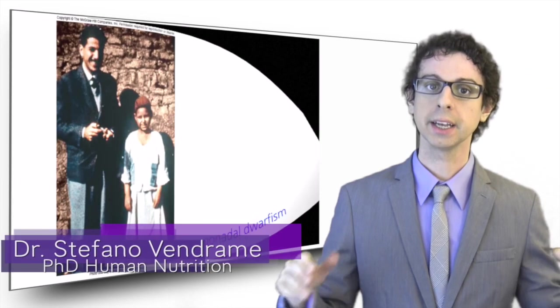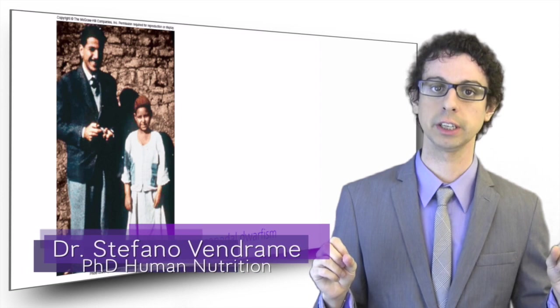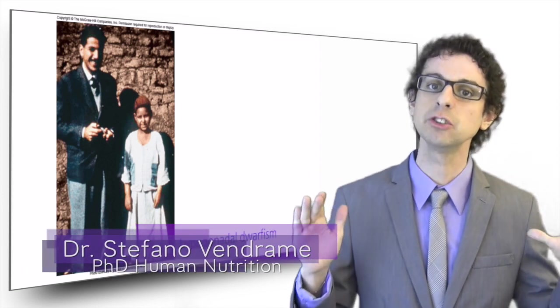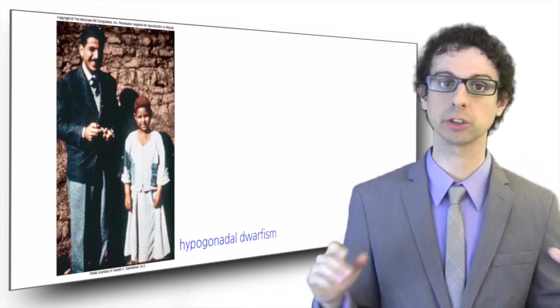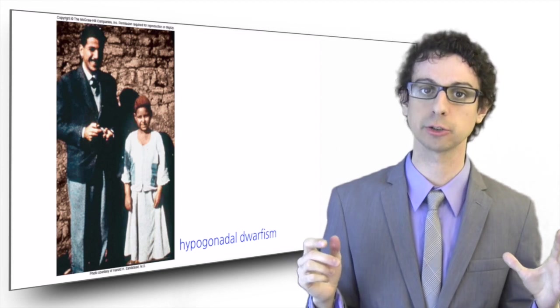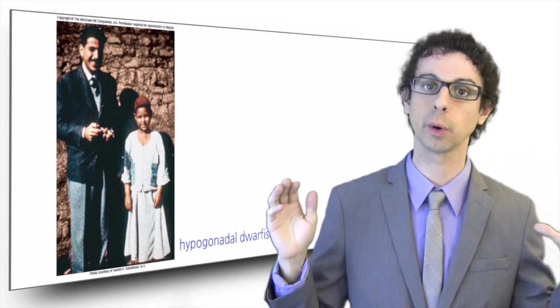The picture you're looking at is a classic in nutrition history. It was taken in Egypt in the early 60s when a team of researchers set out to investigate the causes of a widespread condition in some African and Asian countries known as hypogonadal dwarfism.